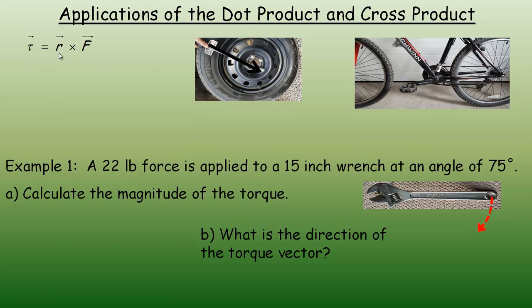This is the torque formula to calculate the torque vector. This vector here would be the R vector which represents the length of the wrench or whatever is being rotated. This is the direction of the force vector here at some angle. The magnitude of the torque is the magnitude of R times the magnitude of F times the sine of angle theta.